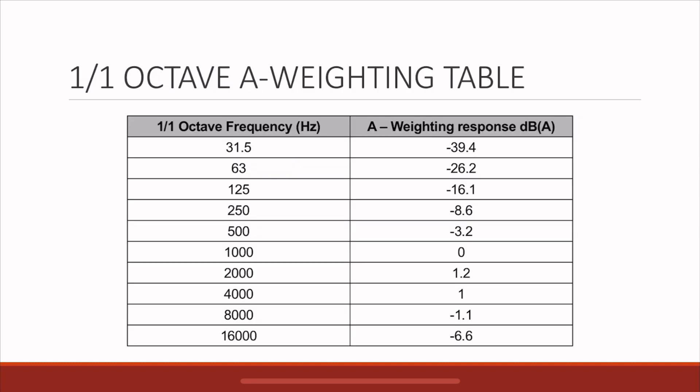This is the conversion table. Here I have the 1/1 octave frequency bands from 31.5 to 16kHz, and these are the corresponding values. You add them to an unweighted level. You can see that the lower frequencies in the bass have a negative value, whereas 1000 hertz has a zero and the higher frequencies are mostly positive. When you add them up, you can get the sound pressure level in A-weighting.